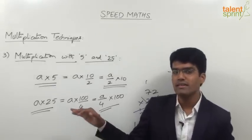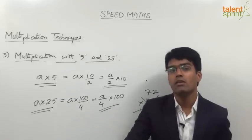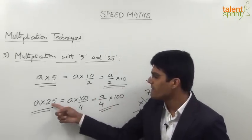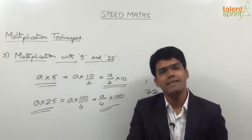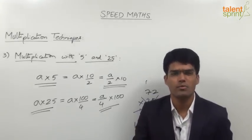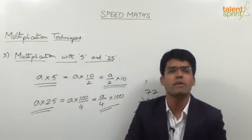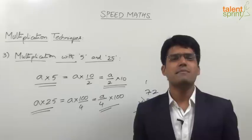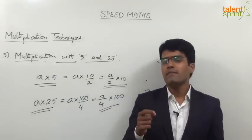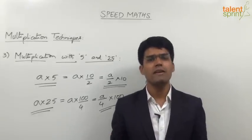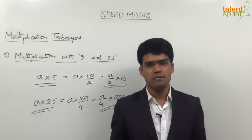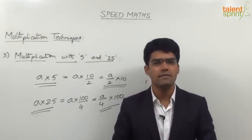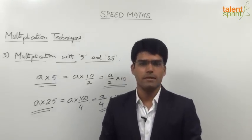Let us now take examples to understand how to multiply numbers with 25 that are not divisible by 4. For example, 26 into 25: that is 26 by 4 into 100. Now 26 by 4 is like 13 by 2, which is 6.5. So 6.5 into 100 is 650. For 34 into 25: 34 by 4 is 8.5, because 32 by 4 is 8 and the extra 2 by 4 is 0.5. So 8.5 into 100 is 850.